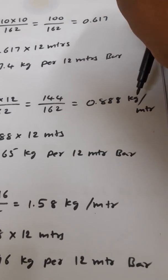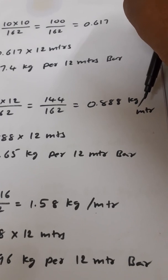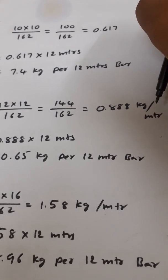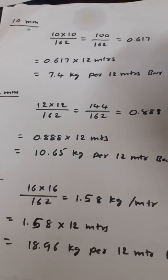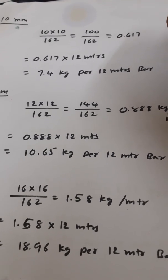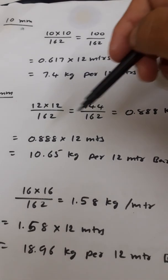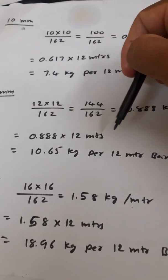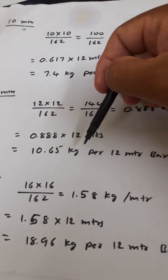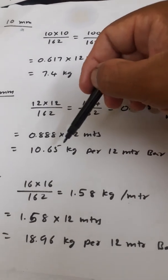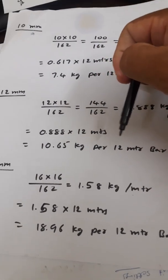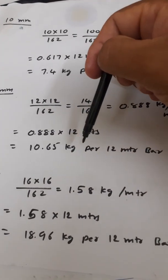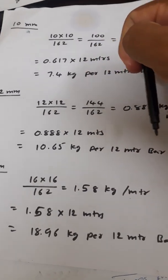The 12mm calculation gives 0.888 kg per meter. Remember, this is only per 1 meter. The standard length of the bar in the market is 12 meters, so 0.888 × 12 meters gives 10.65 kg. The number of 12mm bars multiplied by 10.65 kg gives the total weight of those bars.